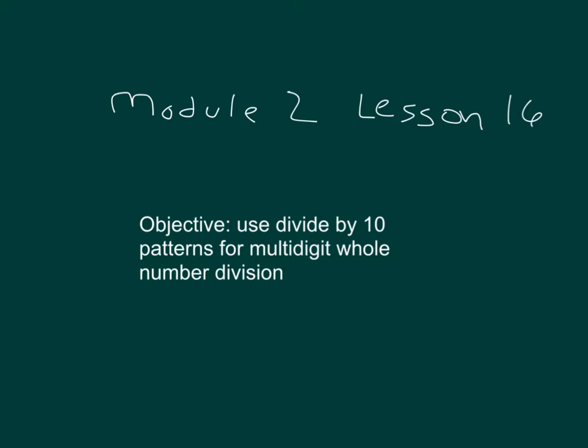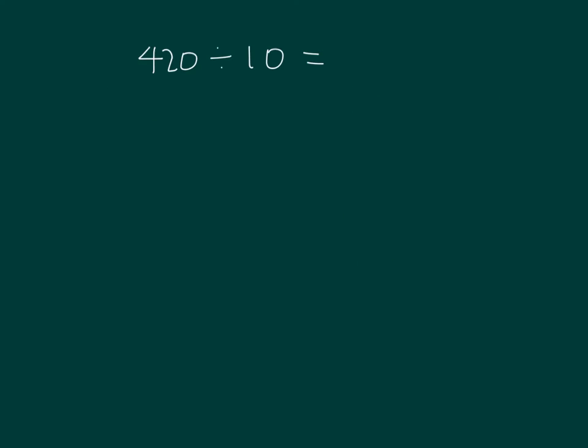The objective is to use divide by 10 patterns for multi-digit whole number division. 420 divided by 10. Let's use place value disks to help solve this problem.